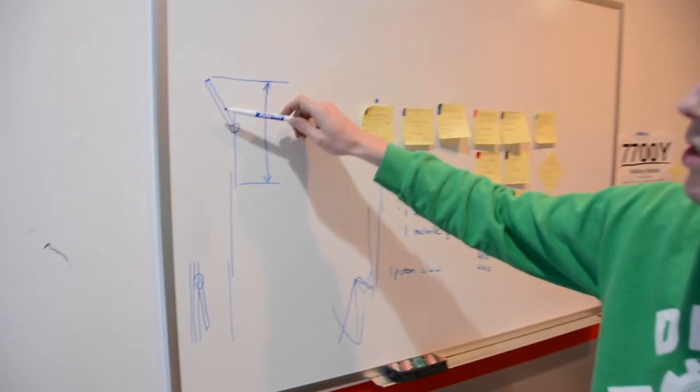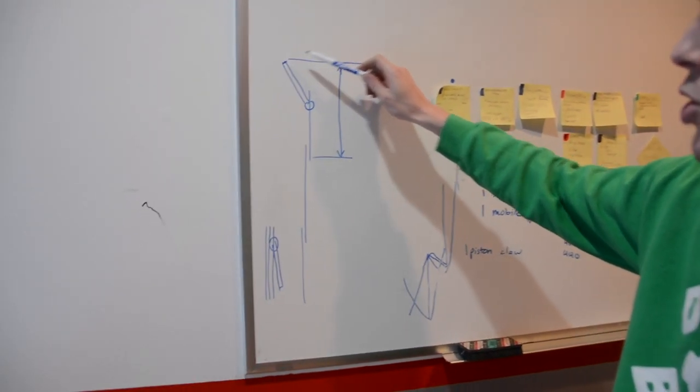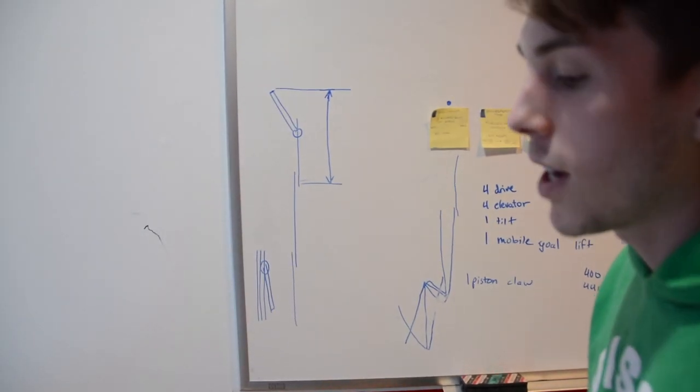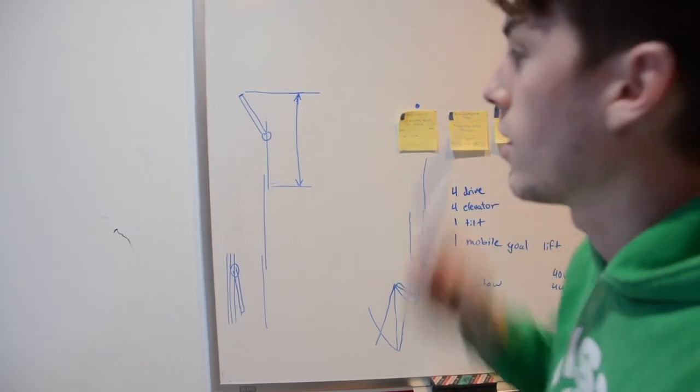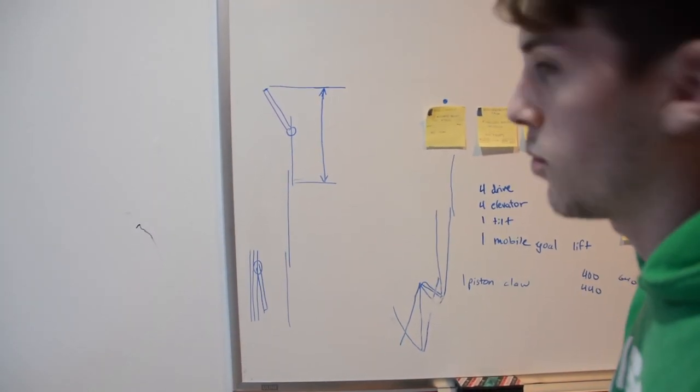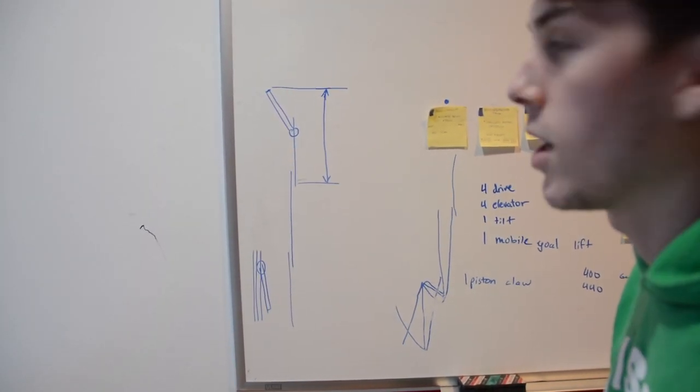If you put a chain bar at the top stage, you can intake on the ground. When you raise the lift, you get extra height from the chain bar. The downside to using it is that we have to put a motor on the elevator lift, and we really want to avoid putting weight up that high.